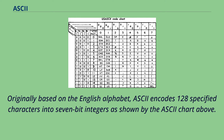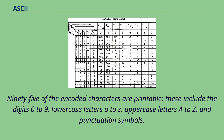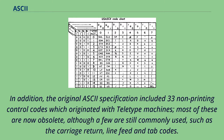Originally based on the English alphabet, ASCII encodes 128 specified characters into 7-bit integers as shown by the ASCII chart. 95 of the encoded characters are printable. These include the digits 0 to 9, lowercase letters a to z, uppercase letters A to Z, and punctuation symbols.